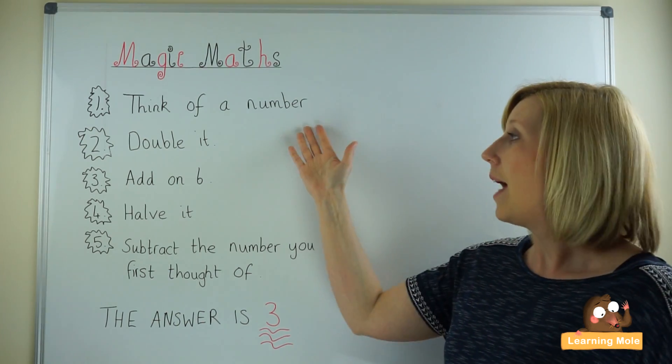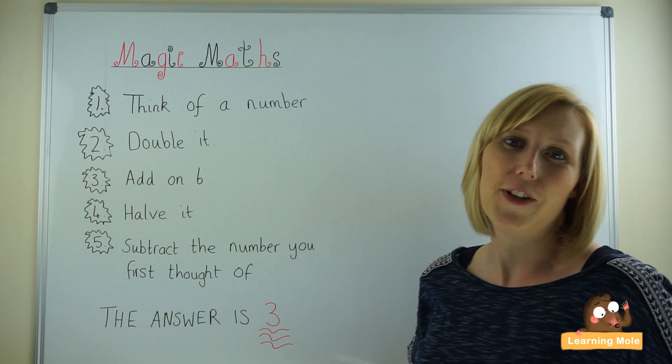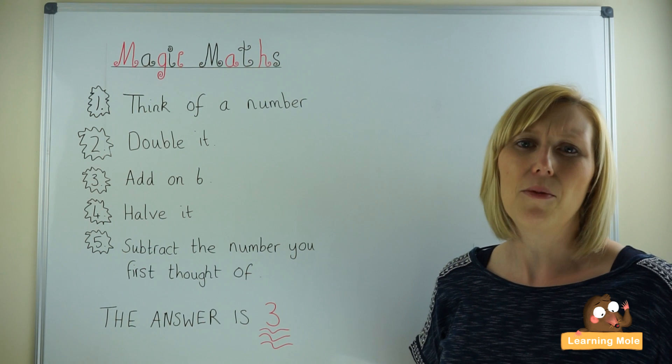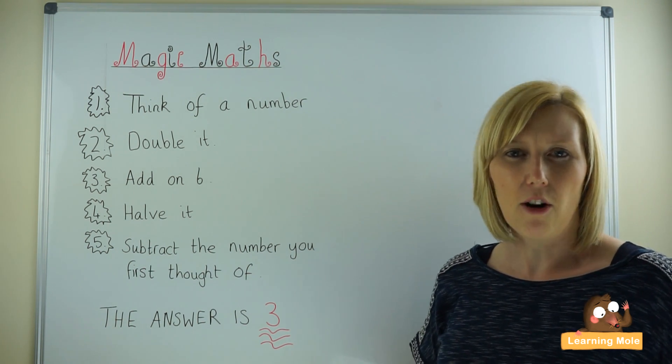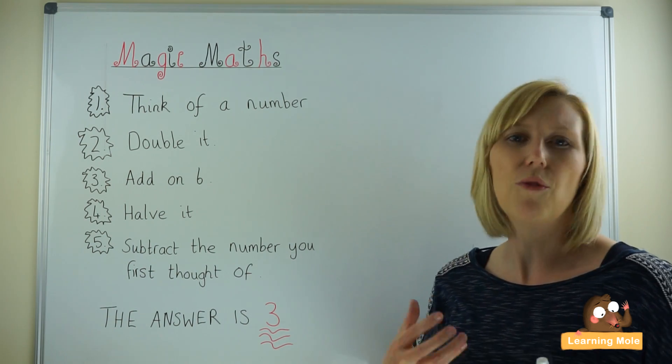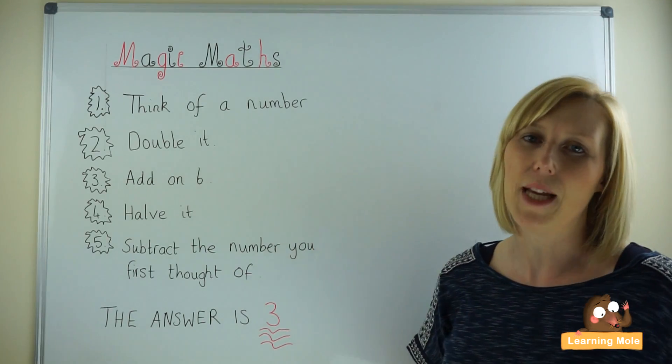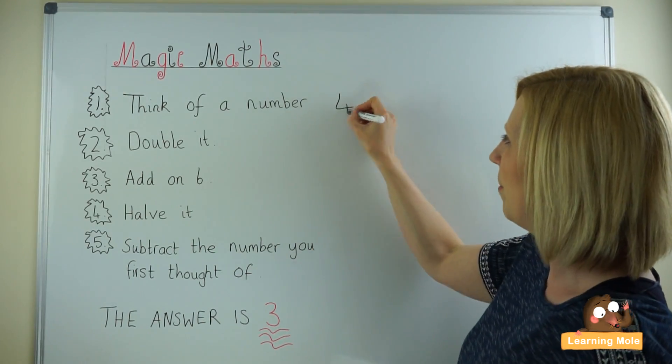Basically we start with asking someone to think of a number. So the best thing is for you to practice this on your child first. So ask your child to think of a number. I would start very easily with a number below 10. Stipulate that to begin with so that they are not being too overwhelmed by having to do big numbers. So think of a number below 10. So your child might say 4. Okay so that's your number that you're starting with.